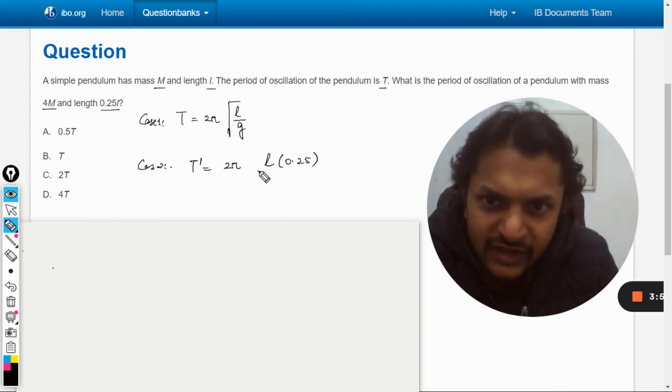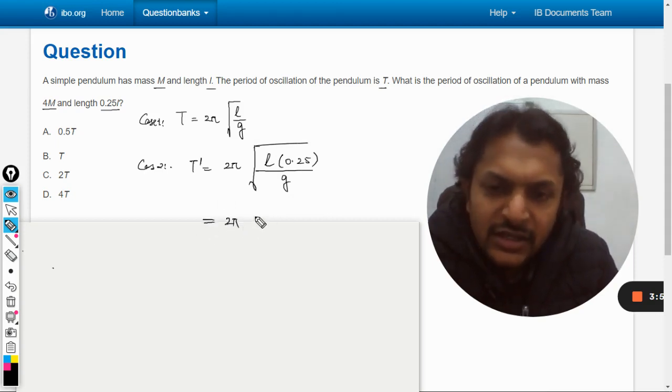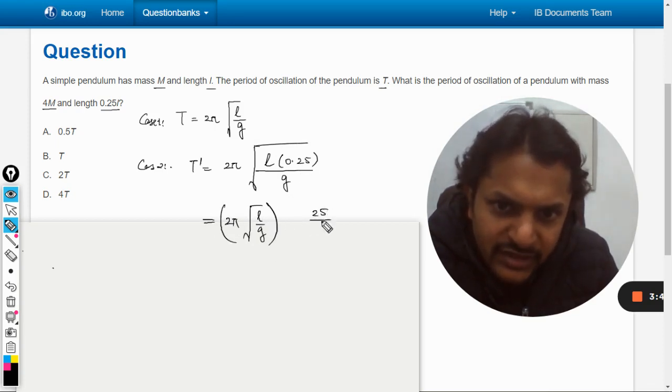multiplied by 0.25 divided by G, square root. Again, as we have done in all other questions, we have just separated this. So I can write it, taking the square root.